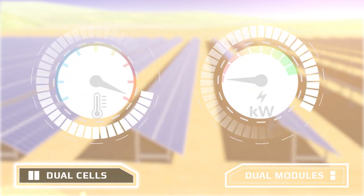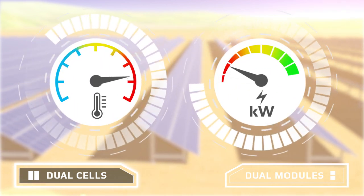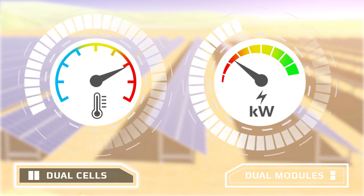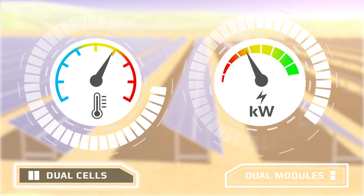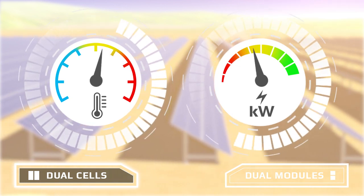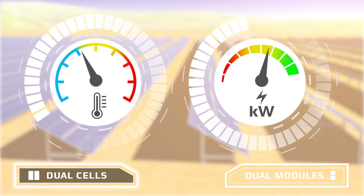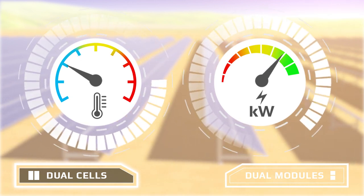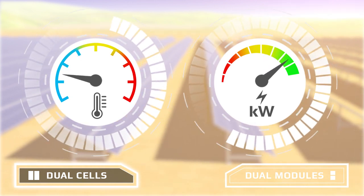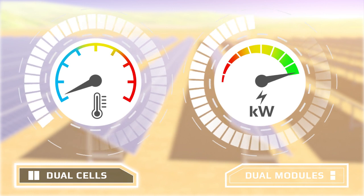Because the module operates cooler and has a better temperature coefficient, it can generate a higher power output. Polycrystalline KOO modules are available at the same power classes as standard monocrystalline modules.